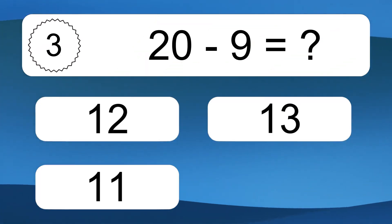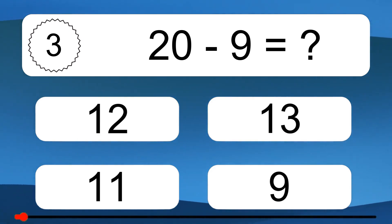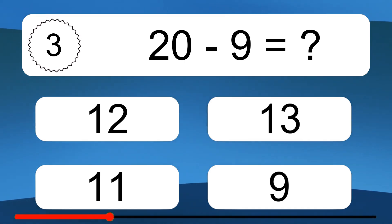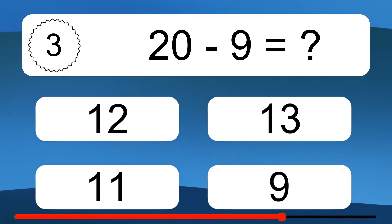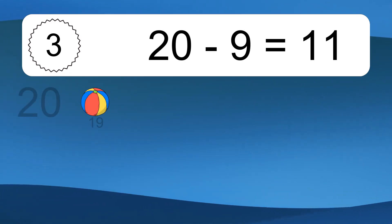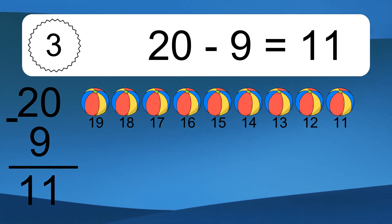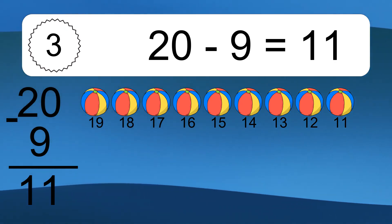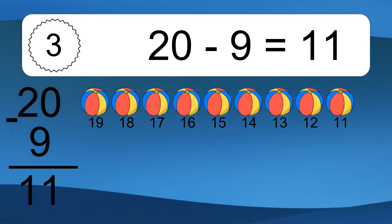20 minus 9 equals what? 20 minus 9 equals 11. Let's count it: 19, 18, 17, 16, 15, 14, 13, 12, 11.